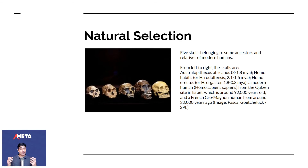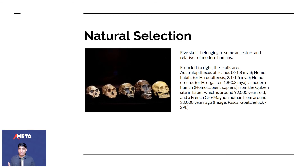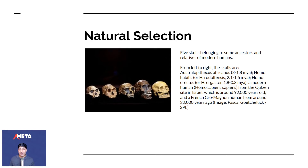Here are five skulls belonging to ancestors and relatives of modern humans. On the far left is Australopithecus africanus, very old, and the intermediate species are mostly extinct because they weren't able to adapt to the environment. We human beings out-competed all of them because of our ability to be social — our ability to team up with each other. That's the key point of why evolution matters for management.